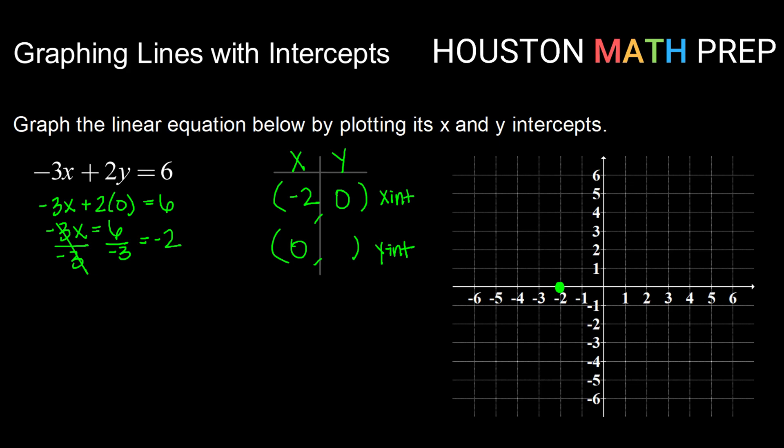And doing the same to fill in my y-intercept, replacing x with zero this time. Negative 3 times zero plus 2y equals 6. Negative 3 times zero is of course zero. So that leaves me with 2y equals 6. Dividing both sides by 2, I get y equals 3, filling in the rest of my y-intercept. So that tells me that the graph of this line crosses through the y-axis at 3. Now that I have two points on my line, I can go ahead and connect through them. And there we have the graph of negative 3x plus 2y equals 6.